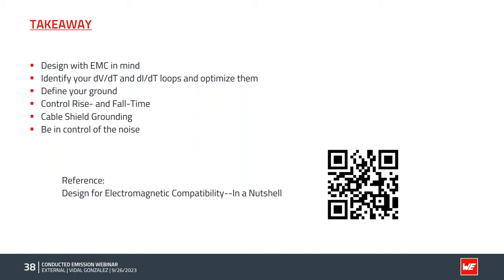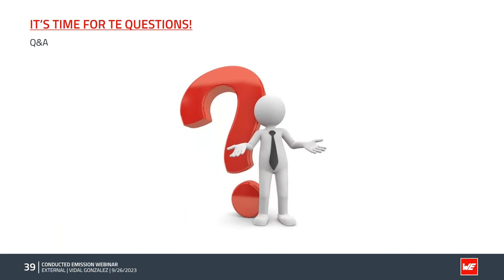I would like to mention the book Design for Electromagnetic Compatibility in a Nutshell. This book inspired me to be part of this project, and much of the content is based on it. It is a free book that you can download — it is a collaboration between Würth Elektronik and Rohde & Schwarz. It covers the history of radiated and common-mode noise regulations and goes through all the different steps in an easy-to-digest manner. Now it's time for the Q&A — if you have any questions, feel free to ask in the chat.